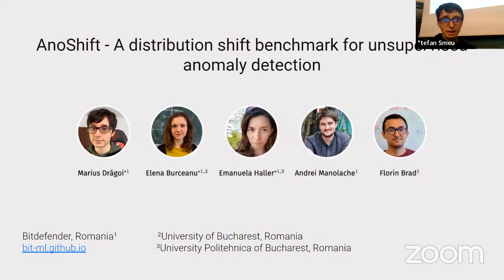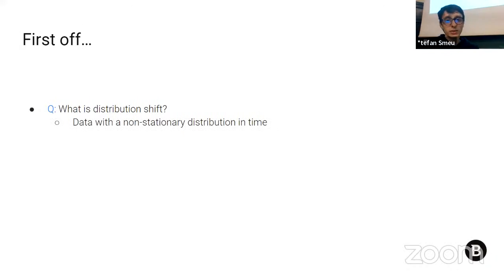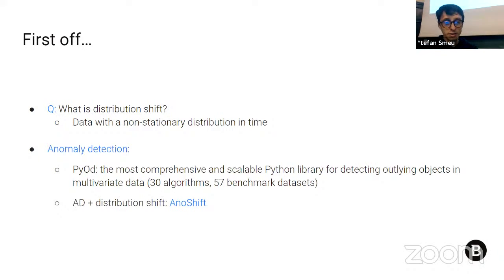First, AnoShift — but before that, what is distribution shift? It refers to data with a non-stationary distribution in time. And anomaly detection refers to identifying outliers in data. As related work, there is PyOD, the most comprehensive and scalable Python library for anomaly detection, containing many algorithms, models, and benchmarks. However, it lacks a focus on data with distribution shift, and that is what AnoShift, our proposed benchmark, is addressing.